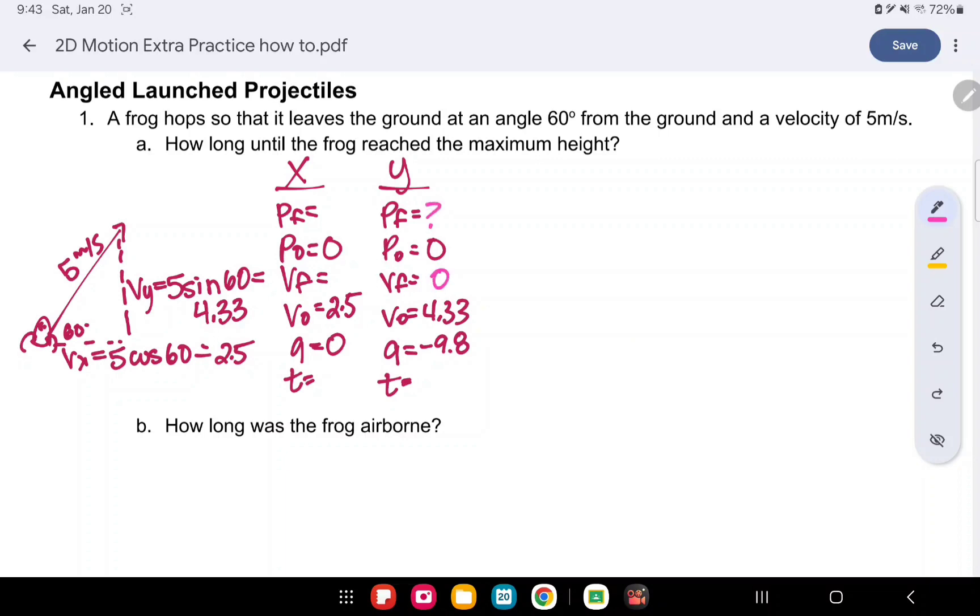We don't have enough information to use our pf equation. So we're going to use our vf equation, our velocity equation. This one. We know that the final velocity is going to be 0. We know our initial velocity is 4.33. We know that gravity is negative 9.8. And we're trying to find the time, how long until the frog reached the maximum height.